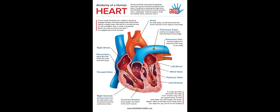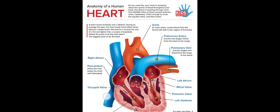We also have some chambers: the right atrium, right ventricle, left atrium, and left ventricle. There are also other parts like the mitral valve and then we have the pericardium. The pericardium is more like a skin that keeps the heart well lubricated. So let's look at this description about the heart.